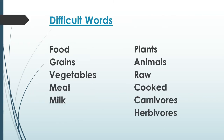First let's see some difficult words: food, grains, vegetables, meat, milk, plants, animals, raw, cooked, carnivores, herbivores. We are going to see these words in the chapter.